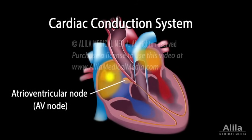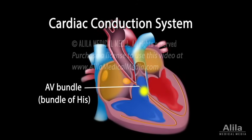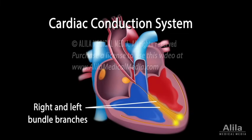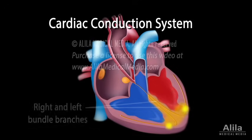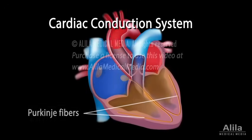The AV node receives signals from the SA node and passes them onto the atrioventricular bundle, AV bundle or bundle of His. This bundle is divided into right and left bundle branches which conduct the impulses toward the apex of the heart. The signals are then passed onto millions of Purkinje fibers and spread throughout the ventricles.